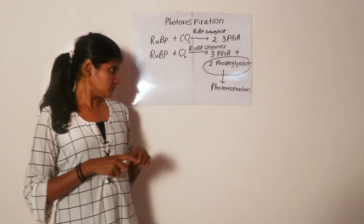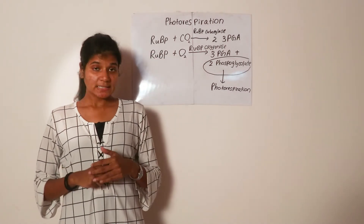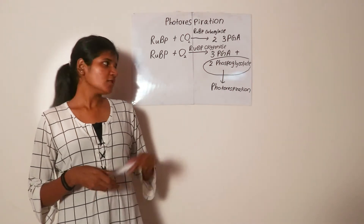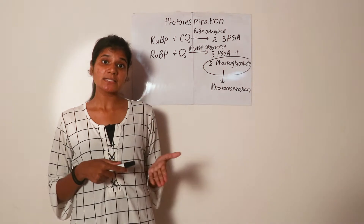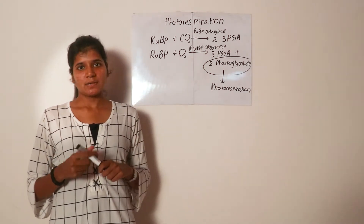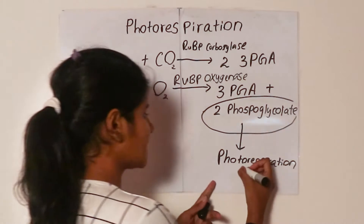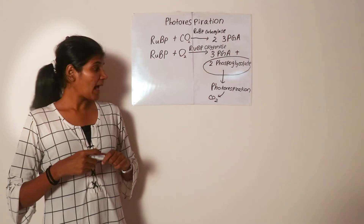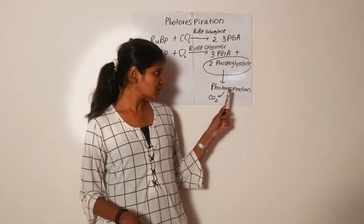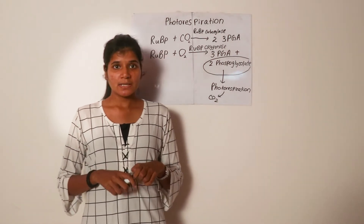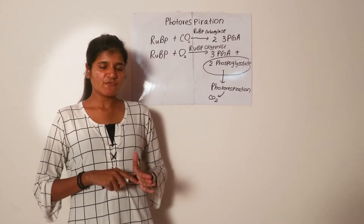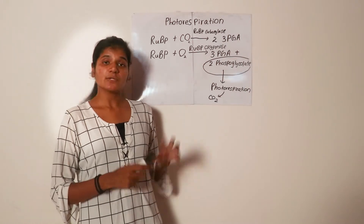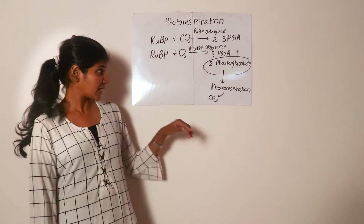In photorespiration, the organs involved are the chloroplast, mitochondria, and peroxisomes. Photorespiration results in a net loss of carbon because carbon dioxide is released in the photorespiratory pathway. It is also an energy-consuming process. Therefore, if photorespiration occurs in a plant, carbon dioxide would be lost and energy would be lost.